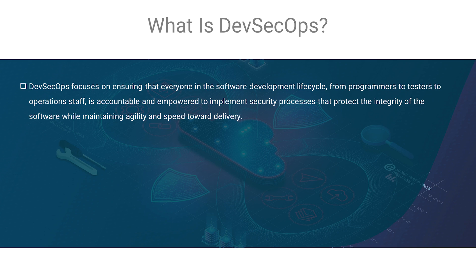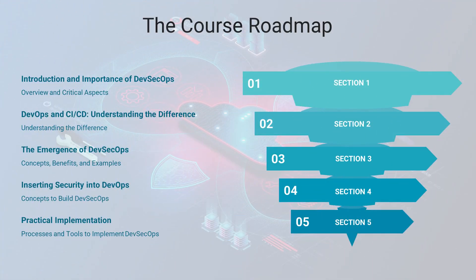The instruction will be through 10 sections and I'll provide more detail in the following video. In brief, here are the areas this course will cover. In section one, I will introduce the course and critical aspects of DevSecOps. In section two, I will cover DevOps and continuous integration and continuous delivery — the focus will be on understanding the difference. Section three will focus on the emergence of DevSecOps and its benefits. Section four will be where I discuss the insertion of security into DevOps.